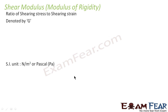Now that we have studied Young's modulus, it is time to study the second type of modulus of elasticity, i.e. the shear modulus. As the name suggests, shear modulus has to be related with the shearing stress and shearing strain. So from the name itself, we can say that shear modulus is the ratio of shearing stress to shearing strain.